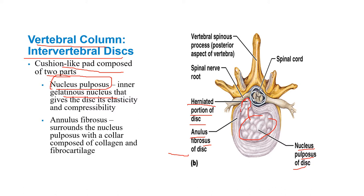A bulging disc stays within the annulus fibrosus and just bulges out. This can cause lateral canal stenosis — there's a canal laterally that allows nerves to come out, and a canal centrally. Stenosis is compression and closing off the space for flow; complete stenosis means nothing would pass through.